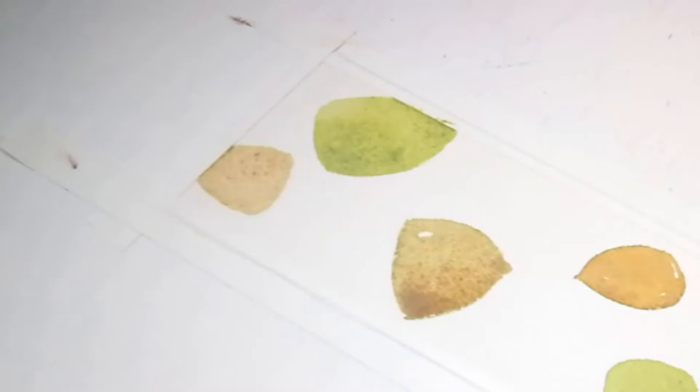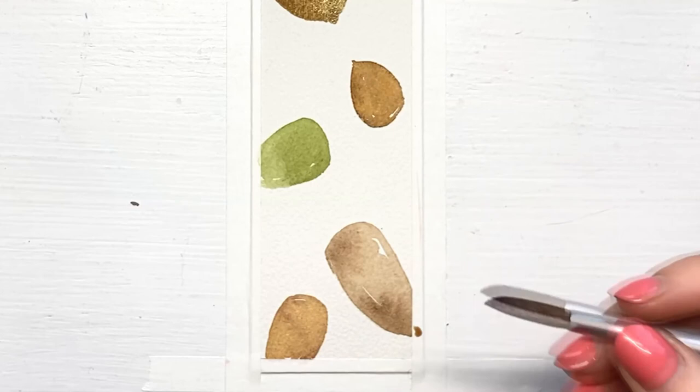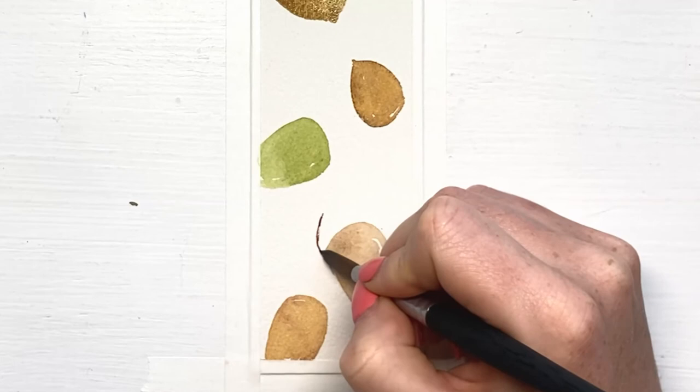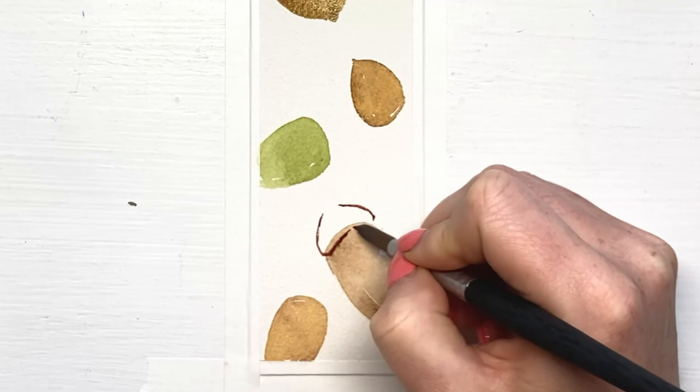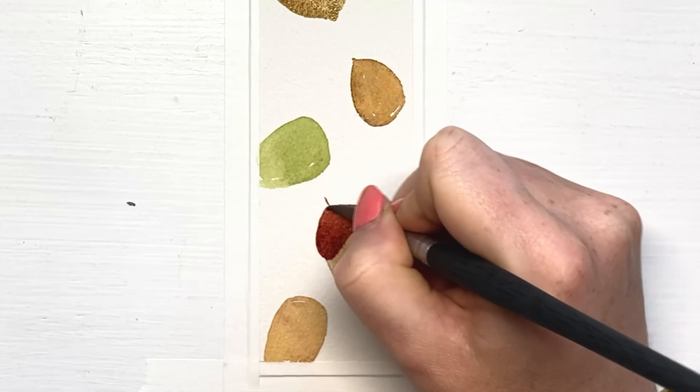Once the nuts have dried, it's time to move on to the cupules. These are the little heads of the acorns. Paint the cupules with your size 8 round brush in a color that contrasts with the color of the nut. Let the cupules overlap the nuts a little bit. And then finish each cupule with either a tiny or a bigger stem.